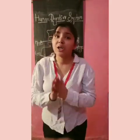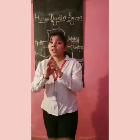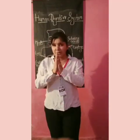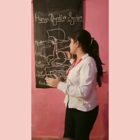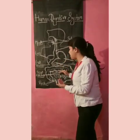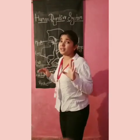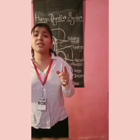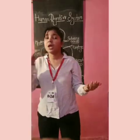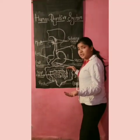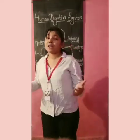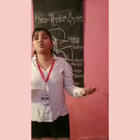The stomach is a J-shaped organ that stores food temporarily. From the stomach, food moves to the small intestine, which is where food is digested by various digestive juices. After this, the large intestine comes, followed by the rectum, and waste is excreted out through the anus.